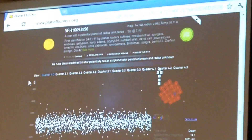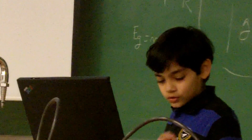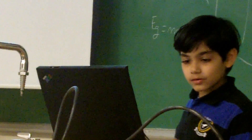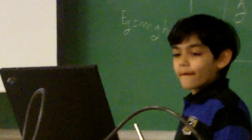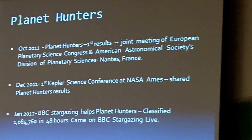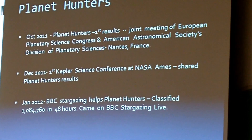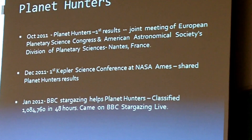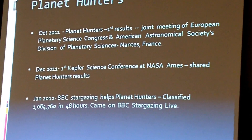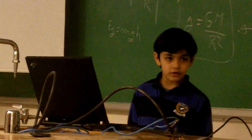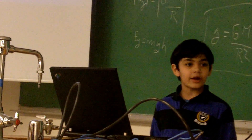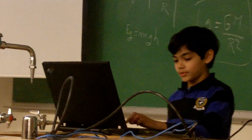So everyone at home can use the program — you have to actually be a member. As long as you register with Zooniverse, you can receive real data and do real science. So one key event happened very recently: in January 2012, BBC Stargazing actually helped Planet Hunters, and Planet Hunters classified 1,084,760 light curves in 48 hours with the help of BBC Stargazing volunteers. The results actually came out on BBC Stargazing Live.